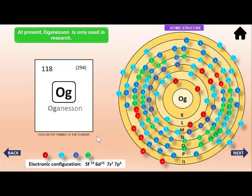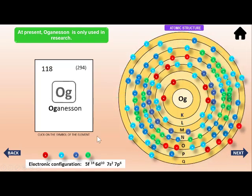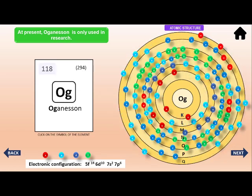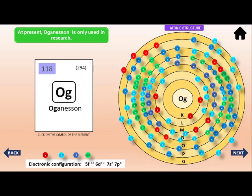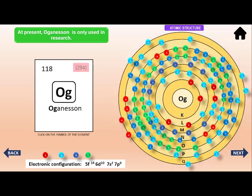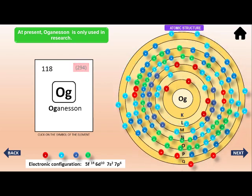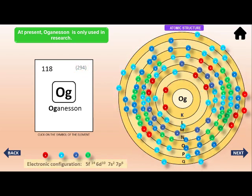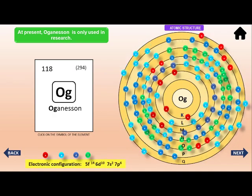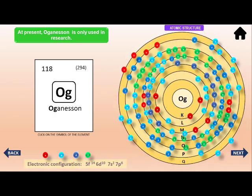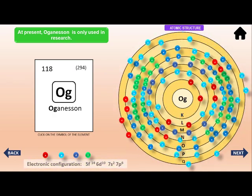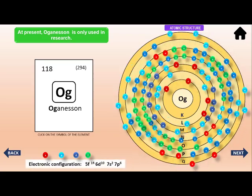Oganesson. The symbol of oganesson is OG. Its atomic number is 118. The relative atomic mass of oganesson is 294. Its electronic configuration is 5F power 14, 6D power 10, 7S power 2, 7P power 6.